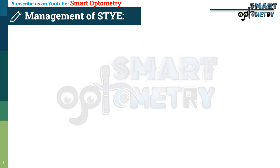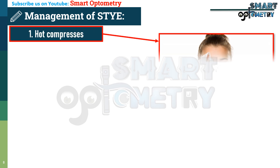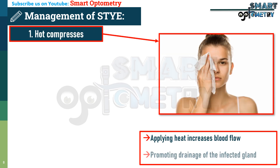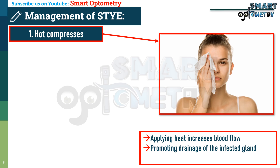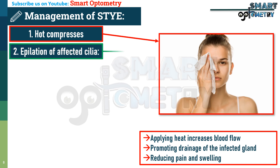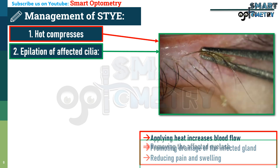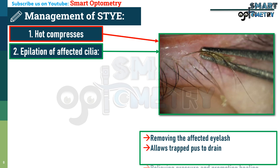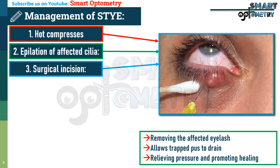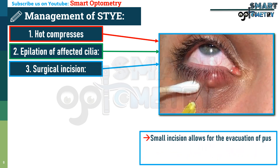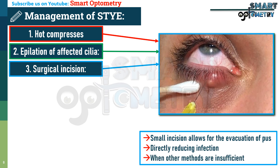Regarding the management of external hordeolum: first, hot compresses — applying heat increases blood flow, promoting drainage of the infected gland and reducing pain and swelling during the cellulitis stage. Second, epilation of the affected cilia — removing the affected eyelash allows trapped pus to drain from the infected gland, relieving pressure and promoting faster healing. Third, surgical incision — for a large abscess, a small incision allows evacuation of pus, directly reducing infection and inflammation when other methods are insufficient.